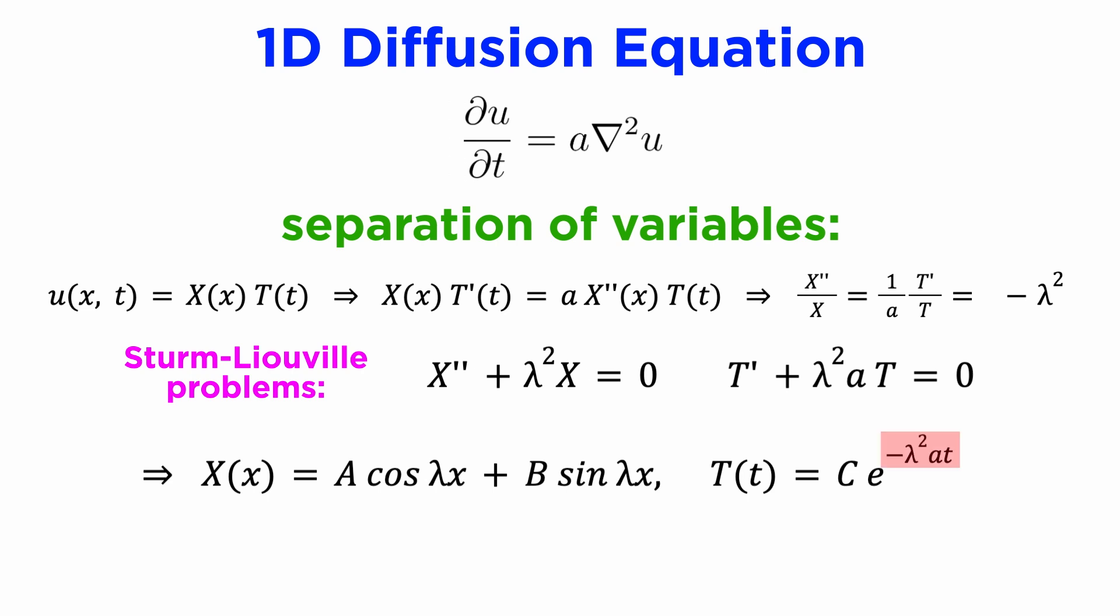Observe that for our temporal function capital T of t, the sign of the exponential is negative, which represents a term that decays in time, which corresponds to the fact that diffusion processes tend to spread things out over time. We can now assign boundary conditions to identify the possible values of lambda and get our solution by superposition of this general solution.